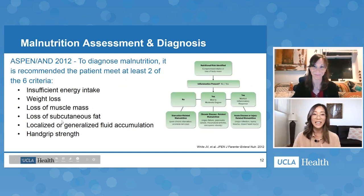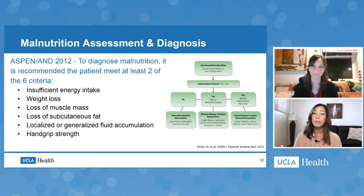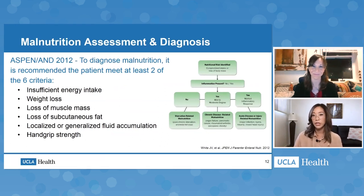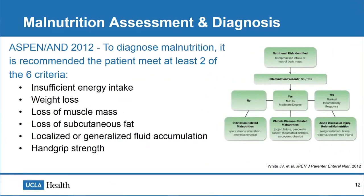Now let's dive into the diagnosis and assessment of malnutrition. We use this criteria as dietitians to determine the type of malnutrition we're working with — whether it's acute, chronic, or starvation/environmental related. In 2012, ASPEN and AND released their consensus statement to define malnutrition. Because malnutrition is multifactorial, there's no single parameter used to define it, which is why identification of two or more of six characteristics is recommended for diagnosis. These characteristics are a work in progress and may change as more data is collected.